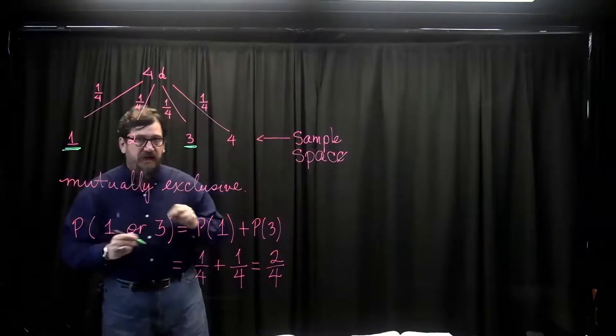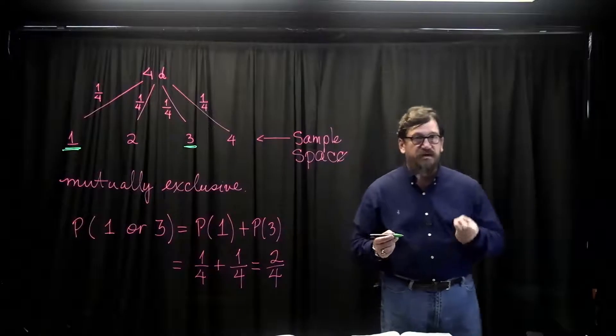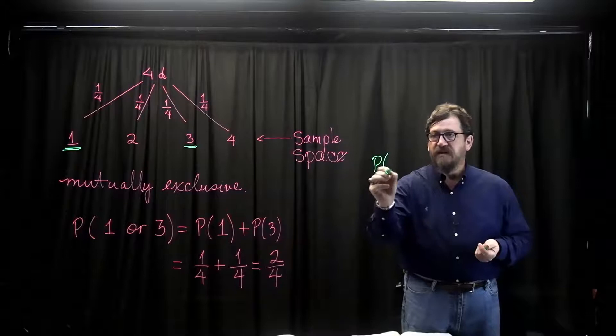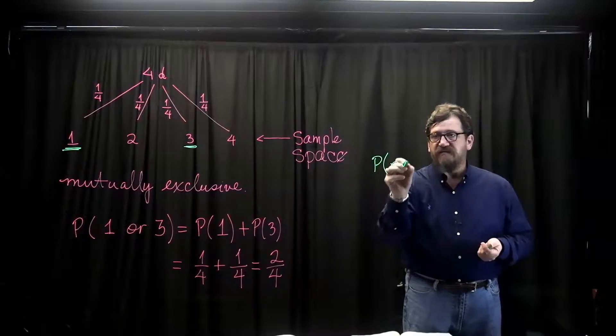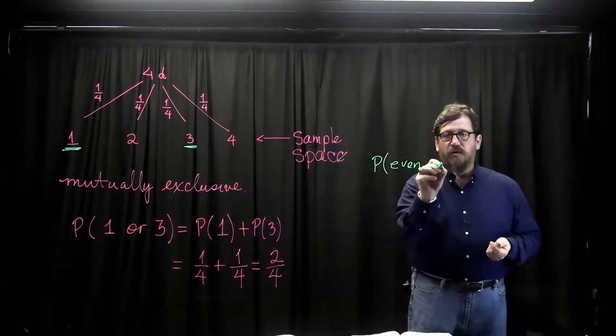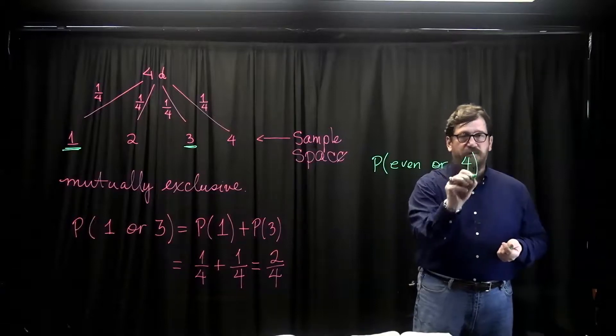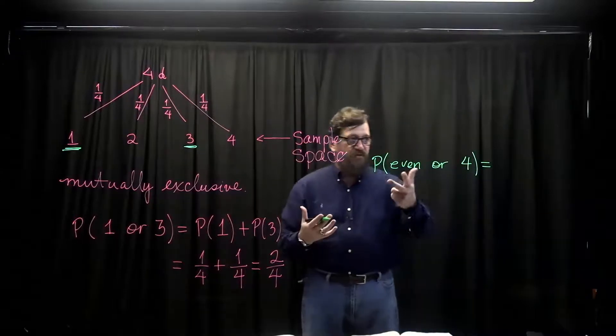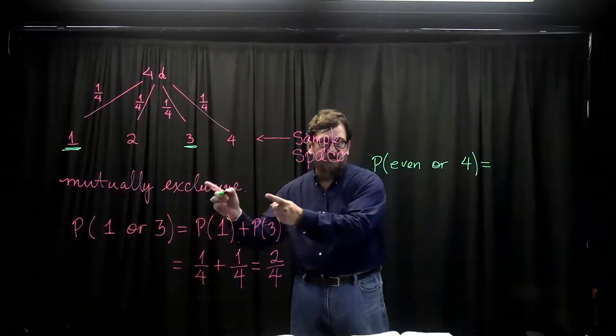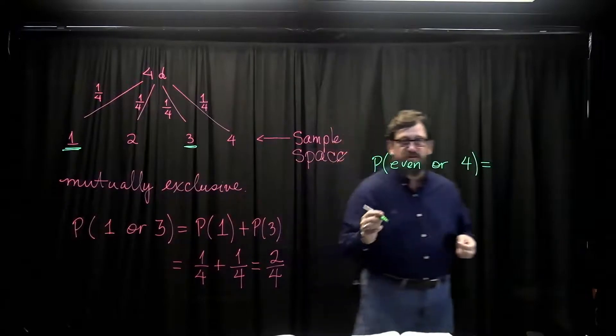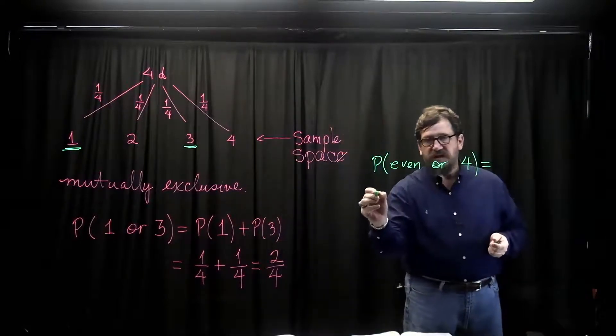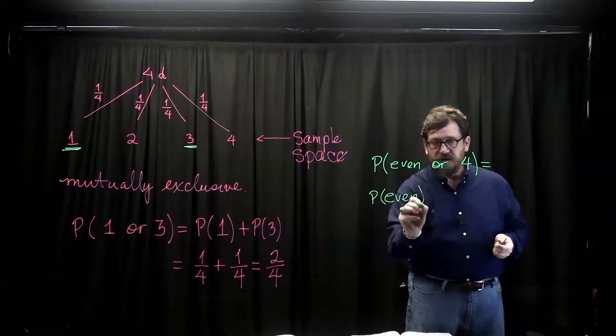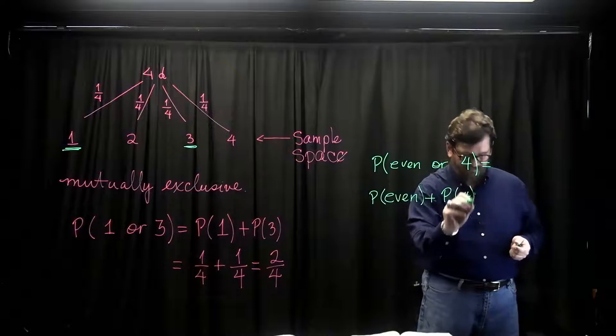Let's look at an option where you do not have a mutually exclusive event. What is the probability of tossing an even number or tossing a 4? Well, now we have two simple events and I'm going to follow the rule as if it were mutually exclusive. This would mean this should be equal to the probability of tossing an even number plus the probability of tossing a 4.